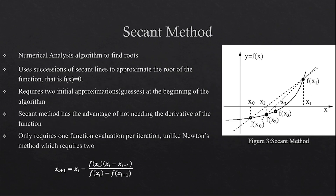Now, let's consider secant method. Secant method uses a succession of secant lines to approach the function. It can be thought of as a finite difference approximation of Newton's method. Secant method relies on two initial approximations, x sub 0 and x sub 1. After that, we evaluate the function at f of x sub 0 and f of x sub 1 to draw a secant line. The secant line will produce our next guess, which would be x sub 2. We then find f of x sub 2 and draw another secant line between f of x sub 2 and f of x sub 1 to produce our third guess. We repeat this process until we approach the real root. Secant method does not require you to bracket the real root by the two initial guesses, but it is always a good idea to have initial guesses relatively close to the real root. This is the updating formula for our next guess using secant method.